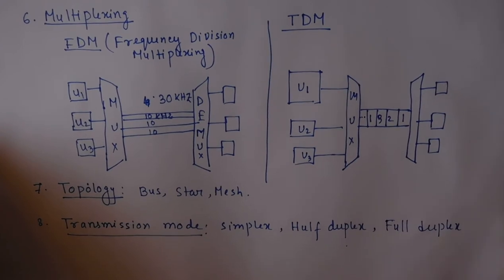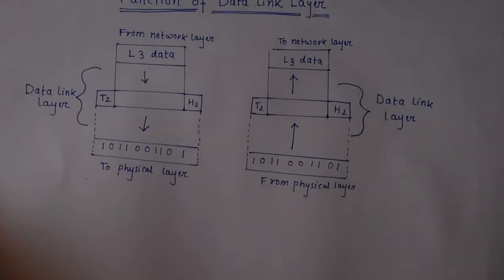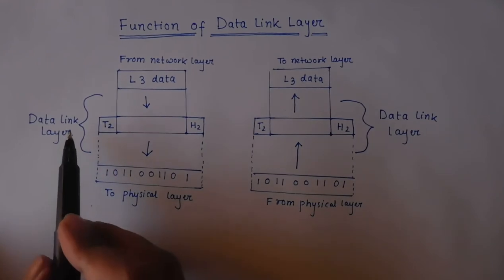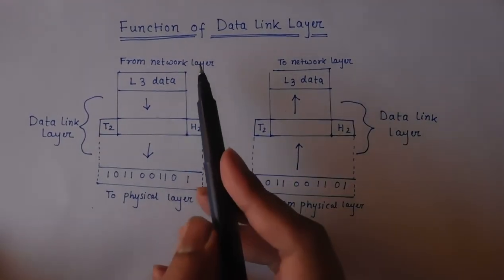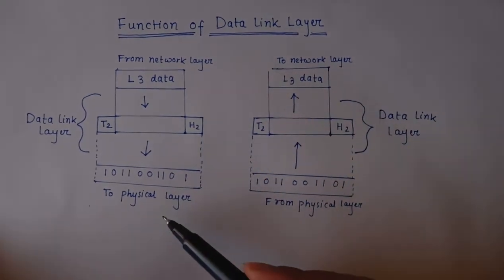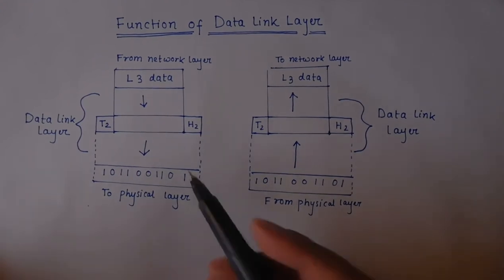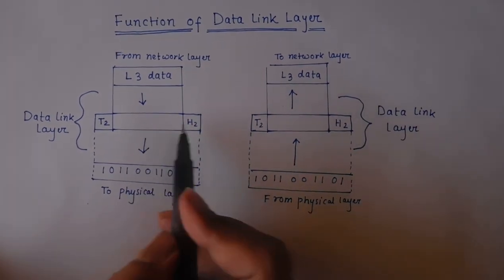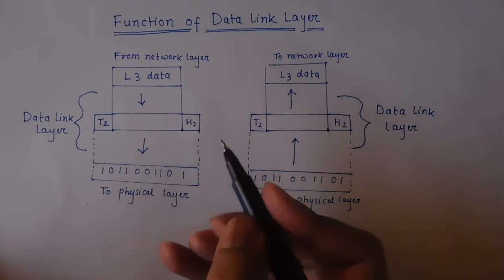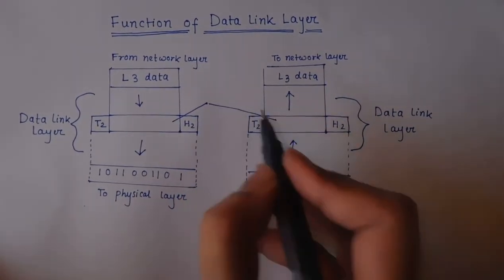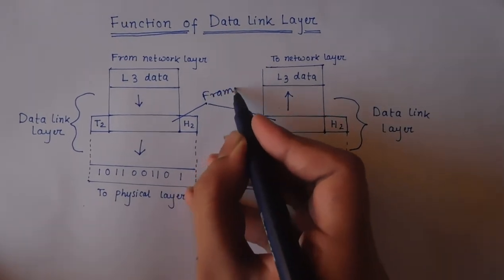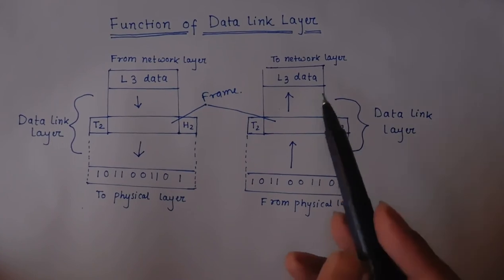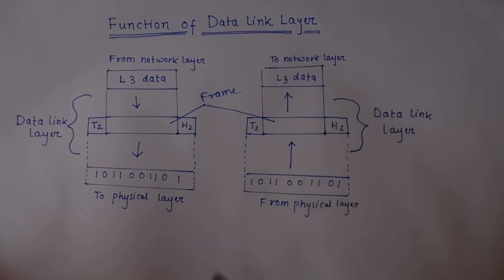Now we discuss the functions of the Data Link layer. The upper layer of the Data Link layer is the Network layer and the lower layer is the Physical layer. In the Data Link layer, data coming from the Network layer is divided into frames. At the receiver end, all the frames are reassembled and the actual data is sent to the Network layer. This whole technique is called framing.